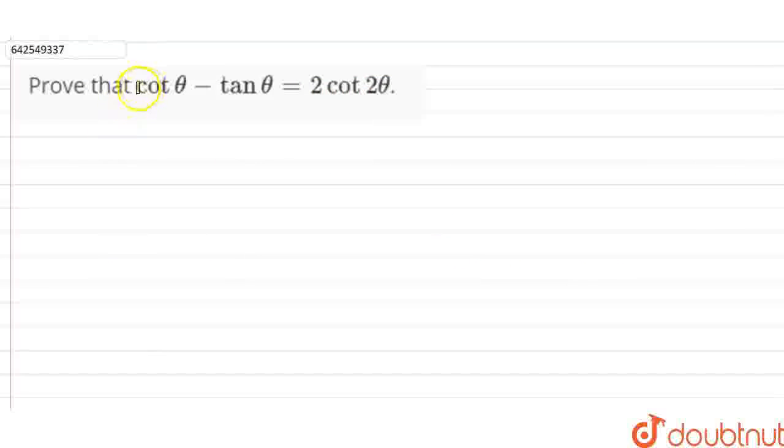Hi students, our question is: prove that cot theta minus tan theta is equal to 2 cot 2 theta. So we can say that firstly, left hand side, we have to prove that left hand side is equal to right hand side. So on the left hand side, we are given cot theta minus tan theta.